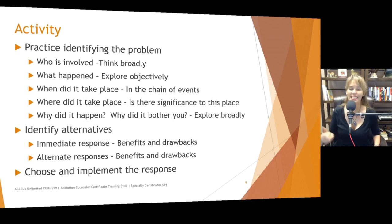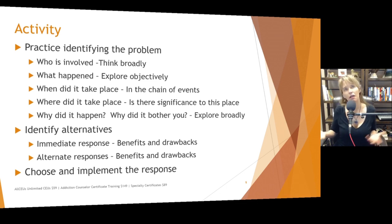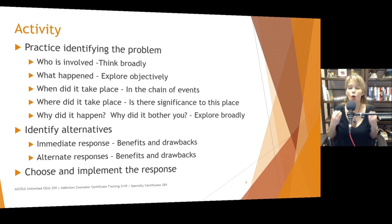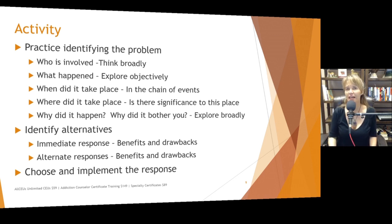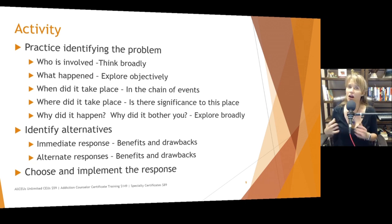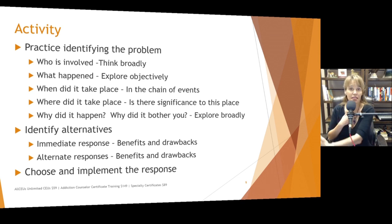The next step is identify alternatives — alternatives to your immediate response. If your immediate response was to lash out in anger, what were the benefits and drawbacks of that? What could you have done instead, and what would the benefits and drawbacks of that have been? This is usually a one-sheeter for journaling, but doing it with one problem one time a day really helps people become a lot more cognizant of their triggers and alternate solutions.